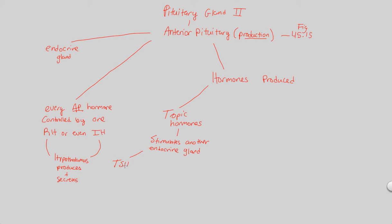Examples of tropic hormones are plentiful. We have thyroid stimulating hormone, which we'll talk about when we get to it. We also have ACTH, which stands for adrenocorticotropic hormone. And there are also gonadotropic hormones released and produced by the anterior pituitary — the classic examples being LH, which stands for luteinizing hormone, and FSH, which stands for follicle stimulating hormone. A tropic hormone is produced by one endocrine gland and then stimulates another endocrine gland.